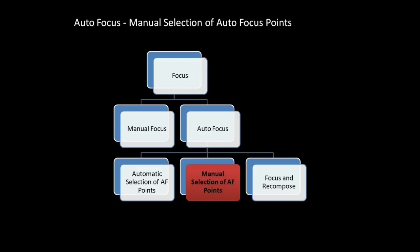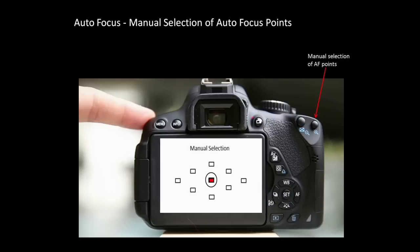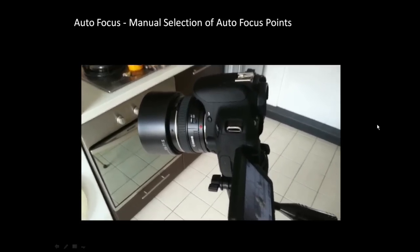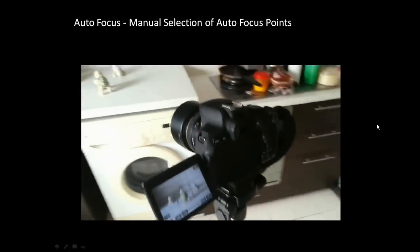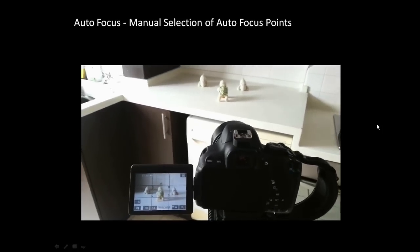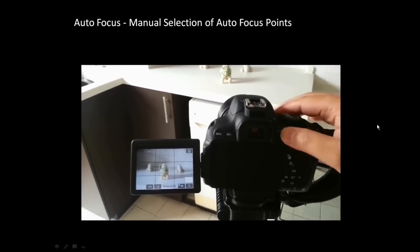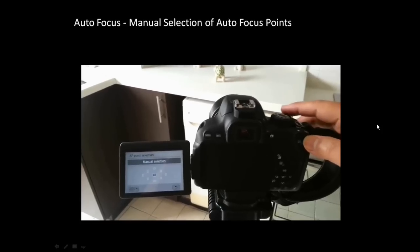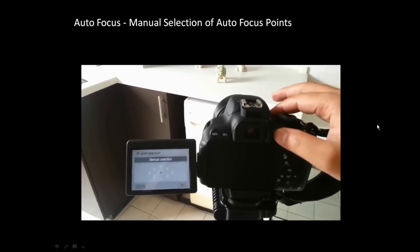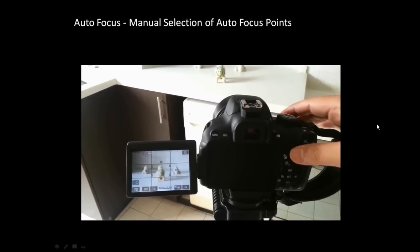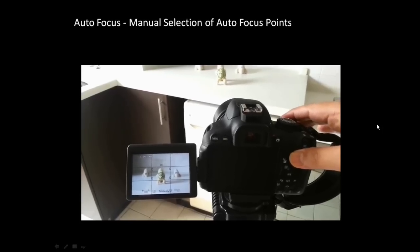Now let's move to manual selection of autofocus points. To manually select autofocus points, press this button and you will see the focus points appear on your screen. Make sure you are on autofocus mode. We have three objects in front of us — if I want to focus on the center object, I press this button and the center point is already selected, meaning it will focus on the center object. I half-press the shutter and it automatically focuses on the center point.